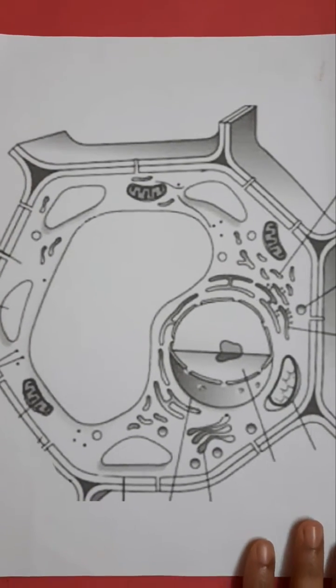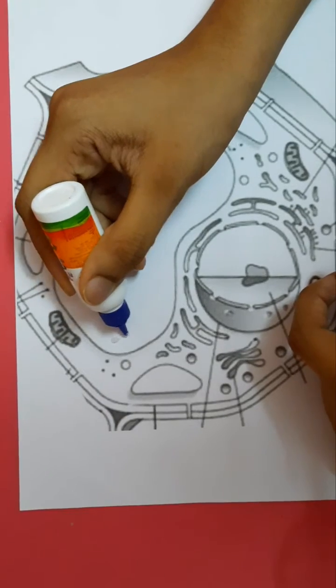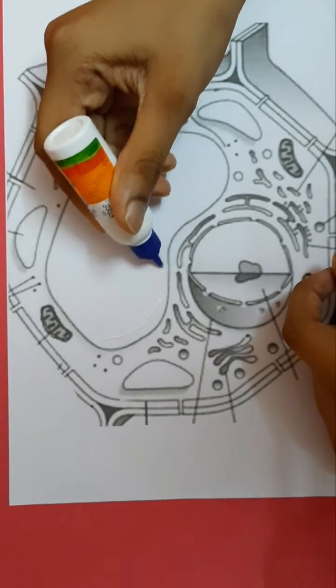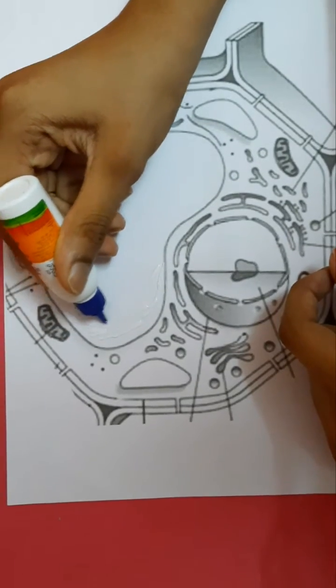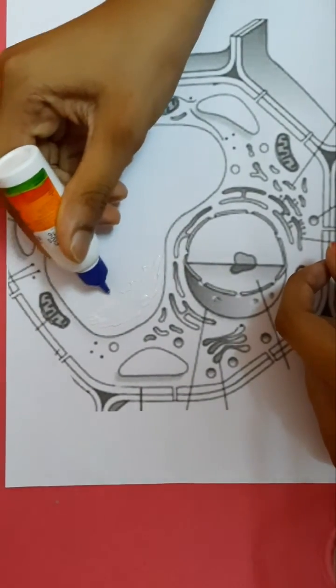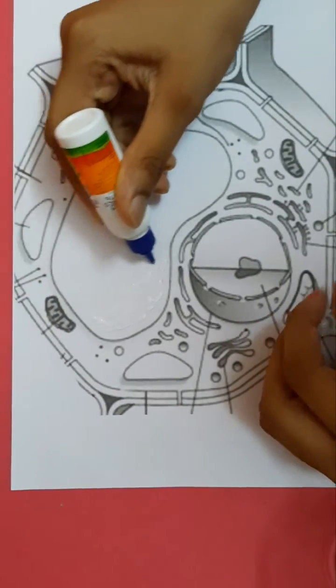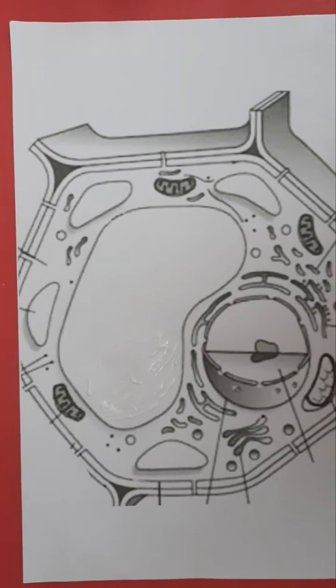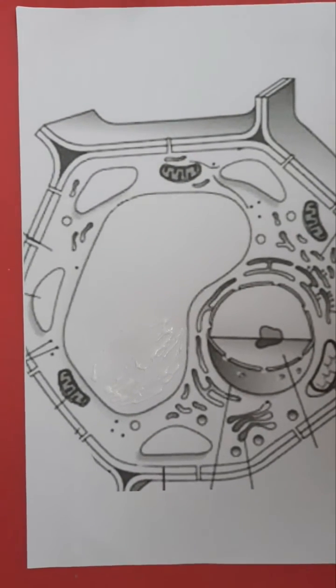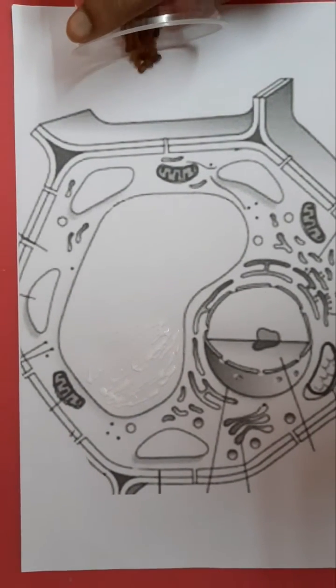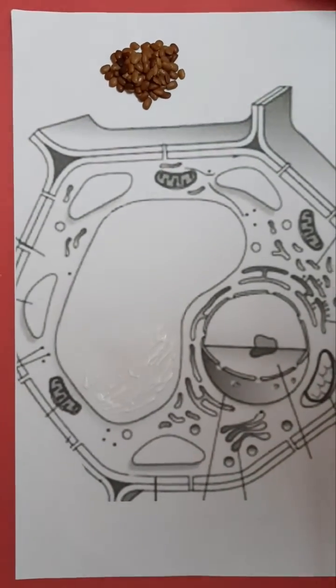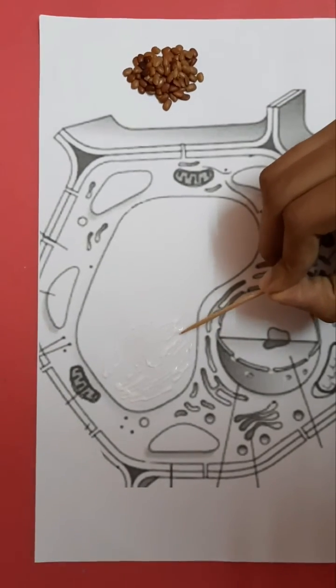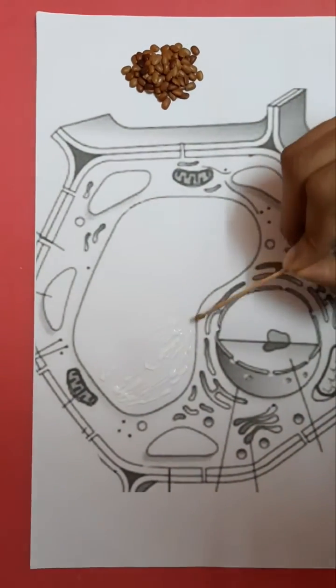this paper. Okay, first of all you should apply glue, apply like this, and then I will show you how to easily stick those grains on this. Now take some grains here and then use one toothpick like this.